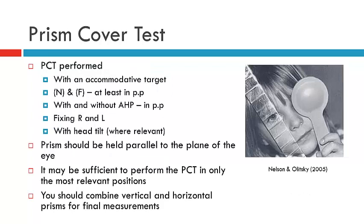In relation to how to perform the PCT, you will translate the skills you've already learned in measuring a deviation in concomitant strabismus to that of incomitant strabismus. The skill is the same: use an accommodative target, utilize the alternate cover test, and watch the eye under the prism as you measure the deviation, looking for neutralization of movement. There is no change in how we perform the PCT except that we're now doing it in different positions of gaze.